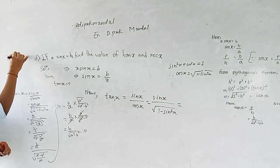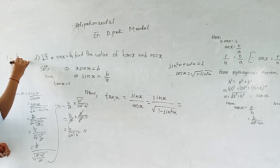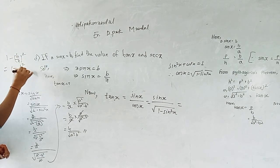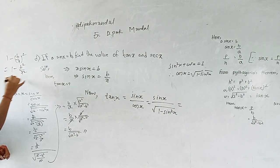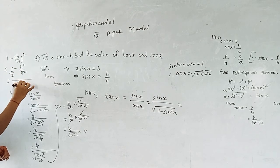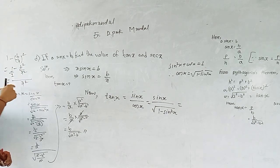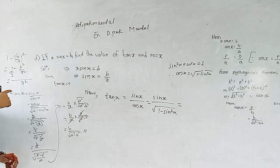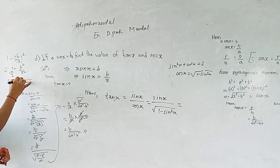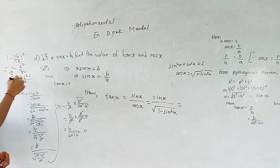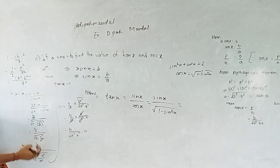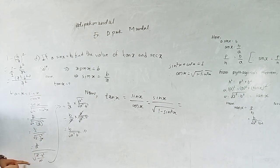We have 1 minus b by a, all squared. That means 1 minus b squared by a squared. Taking LCM as a squared, we get a squared minus b squared by a squared.